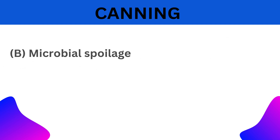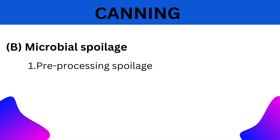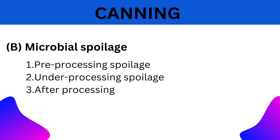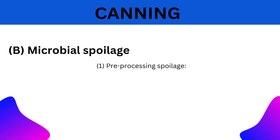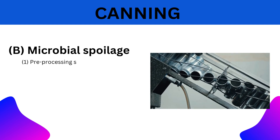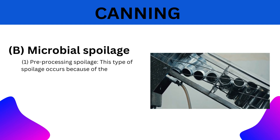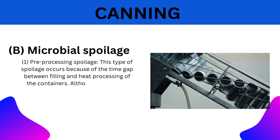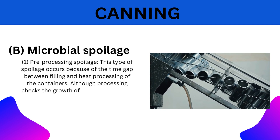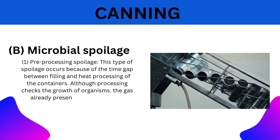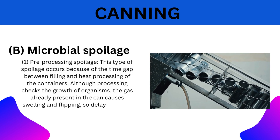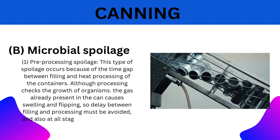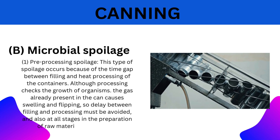B. Microbial Spoilage: 1. Pre-processing spoilage: This type of spoilage occurs because of the time gap between filling and heat processing of the container. Although processing checks the growth of the organisms, the gas already present causes swelling. Therefore, delay between filling and processing must be avoided, and also at all stages in the preservation of raw materials for canning.